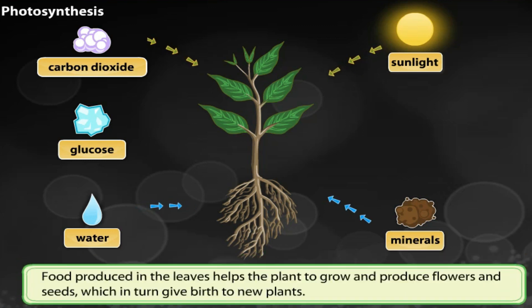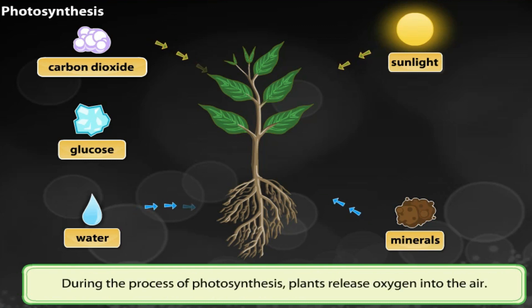Food produced in the leaves helps the plant to grow and produce flowers and seeds, which in turn give birth to new plants. During the process of photosynthesis, plants release oxygen into the air. Oxygen is a gas which humans and animals breathe.